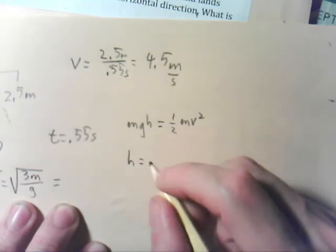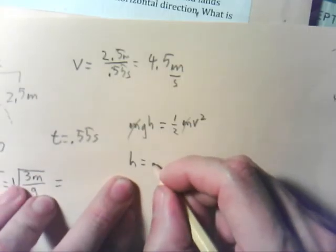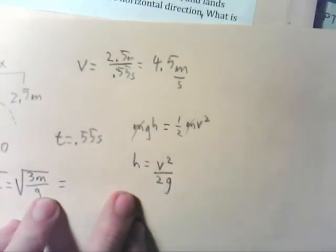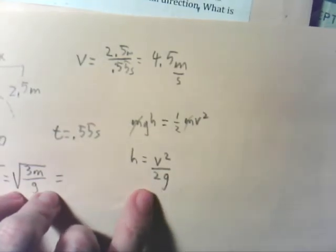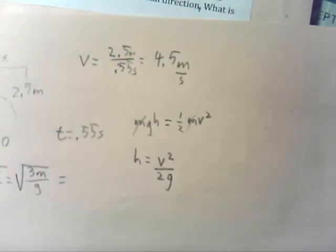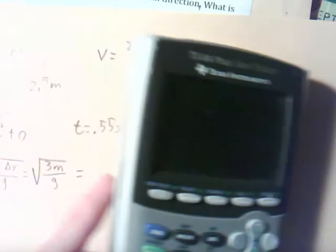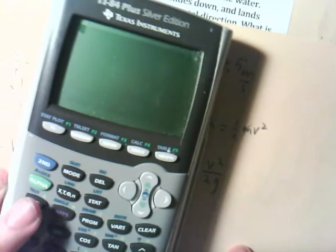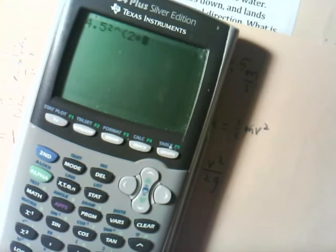So h is equal to... before we get there, we can cancel out our m's, they're on both sides. So h is equal to v² over 2g. Now notice this looks eerily similar to our height equation when we did kinematics. That's because that kinematic equation uses certain inferences for energy. Remember that that only works when air resistance is negligible. So we know all of the things we need to plug into this equation. So we have his velocity, which we said was 4.5 meters per second. We're going to square that, and we're going to divide by 2 times 9.81, 2 times g.